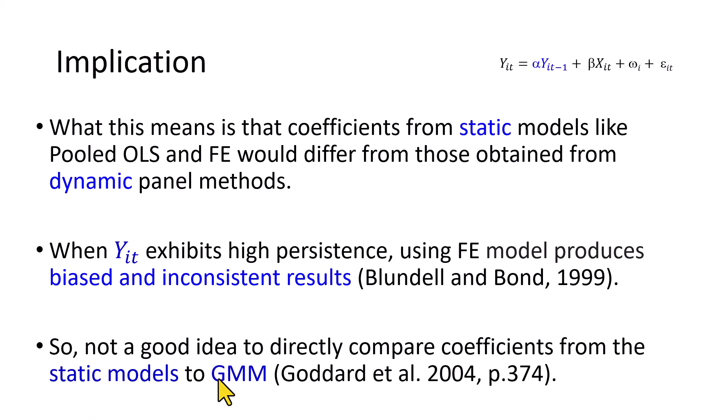And this is critical because a lot of times when we do panel studies, we tend to have a table where in the first column we show results of Pooled OLS, in the second one Fixed Effects, in the third one perhaps GMM. And the temptation to compare the values of the coefficients across the columns is pretty high. And so caution is called for.